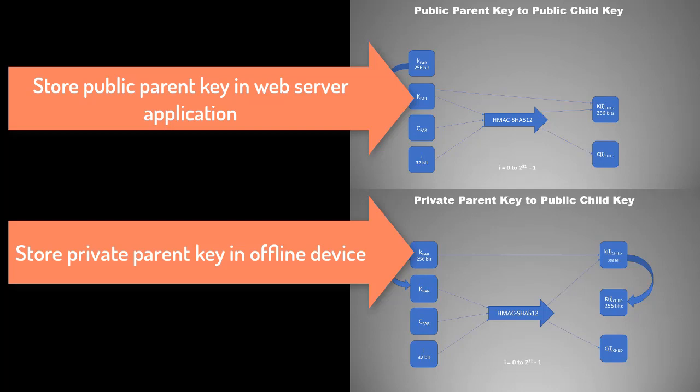Since your web server application has no private key, there is no question of hacking or stealing it. You keep the extended private key in the offline part of your wallet, like a Trezor hardware device. Since it is offline, no one can steal your private key. There is a one-to-one mapping between the private child keys in the offline device and the public child keys in the web server. You can use the web server application to monitor and receive funds, and connect your physical device only when you need to spend funds. This type of key management provides immense security through clean segregation of private and public keys.